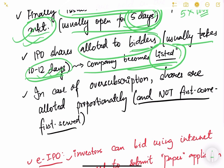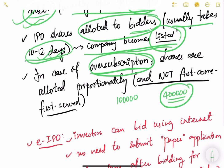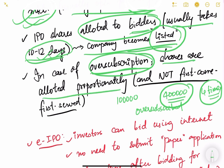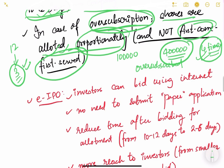After the five-day bidding closes, it takes another 10 to 12 days for the company to allot shares to bidders, accounting for how many bids and subscriptions were received. In case the IPO is oversubscribed — for example, if the company was going to sell 1 lakh shares but four lakh people subscribed, making it four times oversubscribed — shares are proportionately allocated, not on a first-come first-serve basis. So a person who bid for 12 shares would get three shares, which is one-fourth.